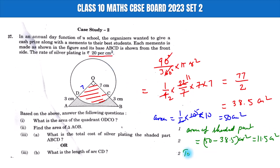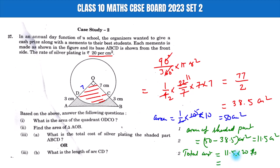The total cost is equal to 11.5 multiplied by 20 rupees, which gives 232 rupees.